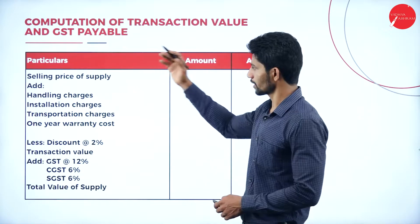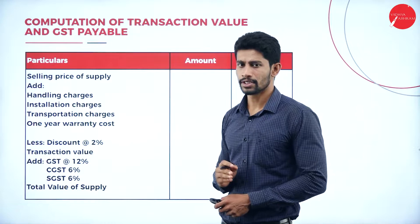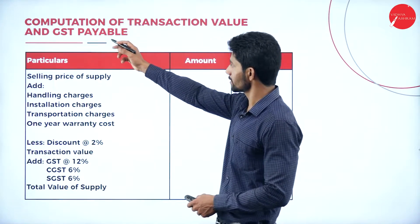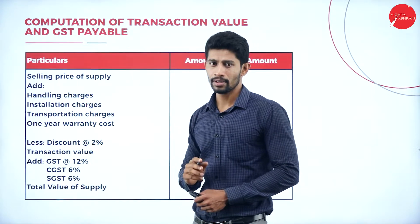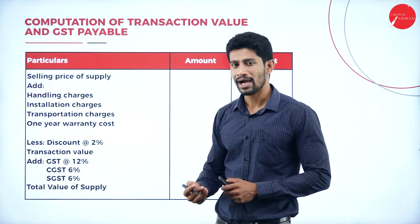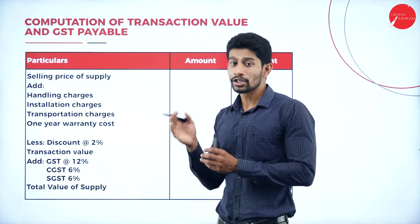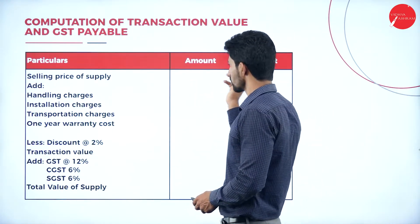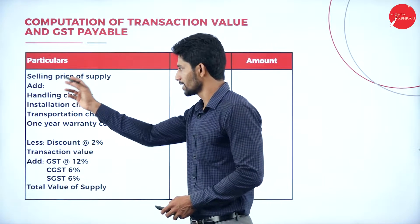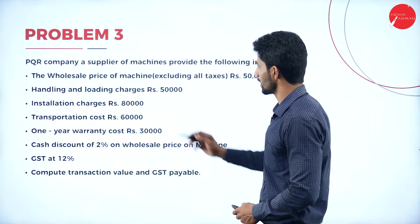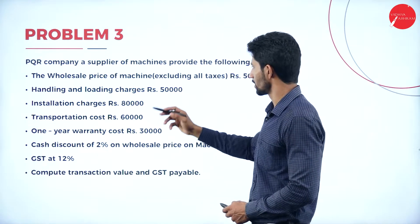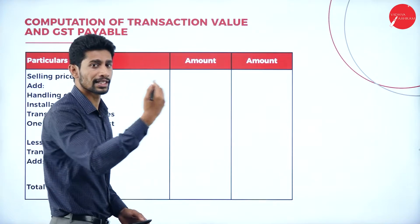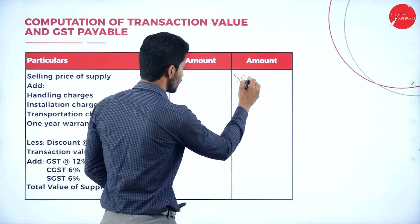Moving on to the solution part, as usual we are supposed to make three columns — particular, amount, amount. Before putting the columns, you have to write: computation of transaction value and GST payable, or computation of value of supply, because value of supply includes both the transaction value and the GST payable. First, we take the selling price of supply — the wholesale price of the machine — Rs. 50 lakhs, taken in the outer column.